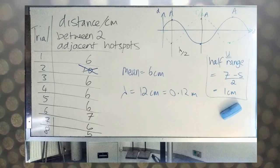So here are our results: 6, 10, 6, 6, 6, 7, 6, 5. 10 has to be excluded—it must be an outlier. And if you take the mean, it's six centimeters. We didn't feel confident enough to express it to more than one significant figure. So the wavelength was 12 centimeters, and the half range is the biggest value, 7, minus the smallest value, 5, divided by 2. So it is actually 6 centimeters plus or minus 1 centimeter.